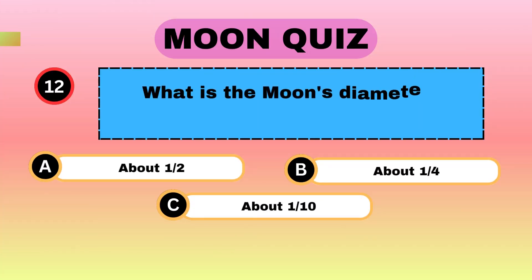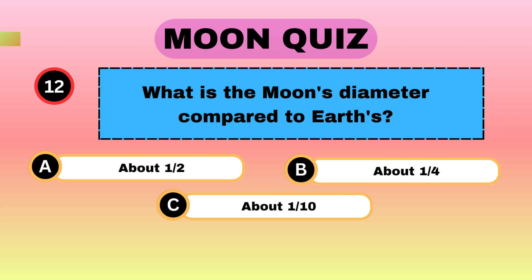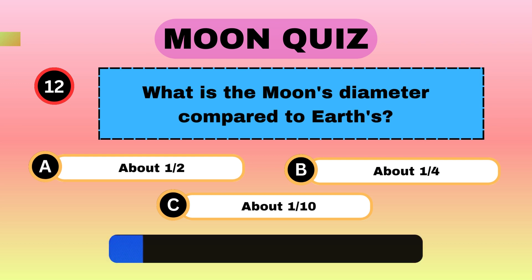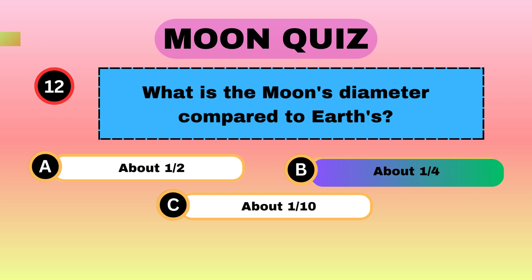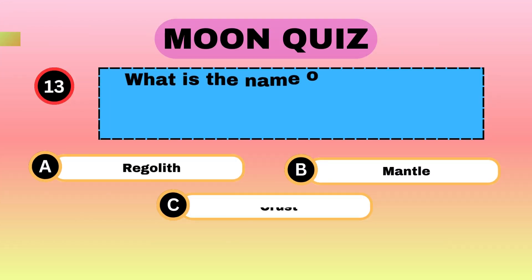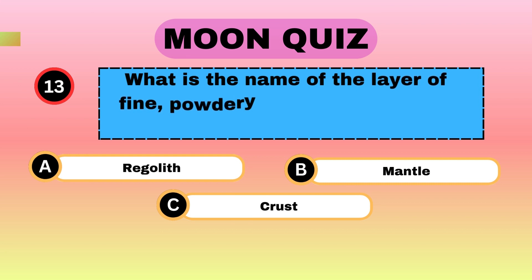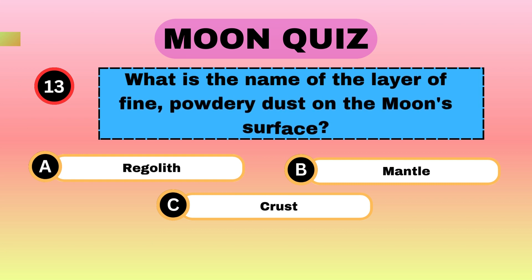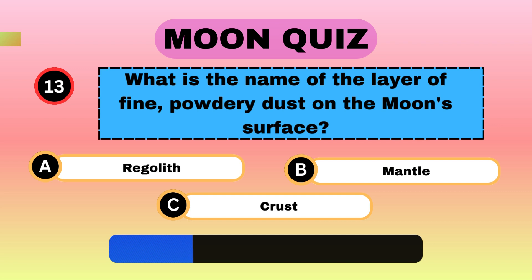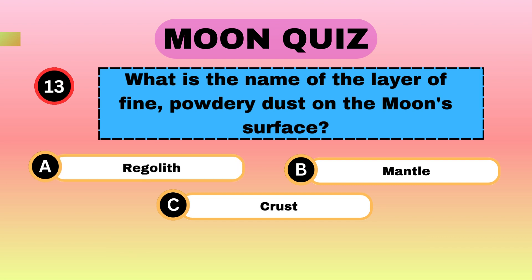What is the Moon's diameter compared to Earth's? About one quarter. What is the name of the layer of fine, powdery dust on the Moon's surface? Regolith.